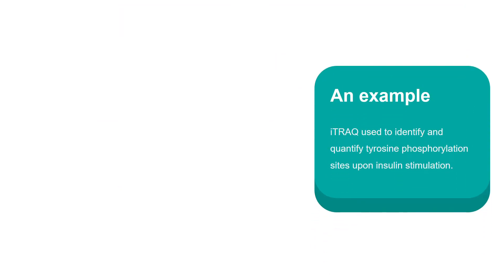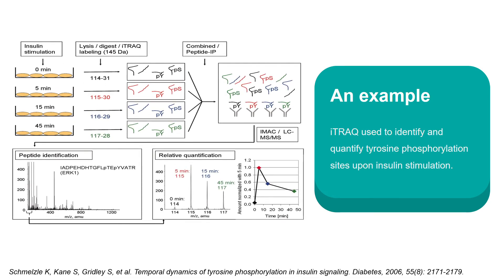There is an example where iTRAQ was used to identify and quantify tyrosine phosphorylation sites upon insulin stimulation. In this experiment, adipocytes were stimulated with insulin for different times. After cell lysis and digestion, the researchers used iTRAQ reagents to label the resulting peptides. The labeled peptides were combined for further analysis, including phosphotyrosine peptide immunoprecipitation, immobilized metal affinity chromatography, and liquid chromatography tandem mass spectrometry.